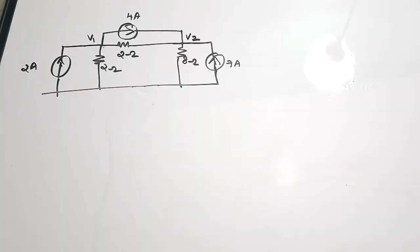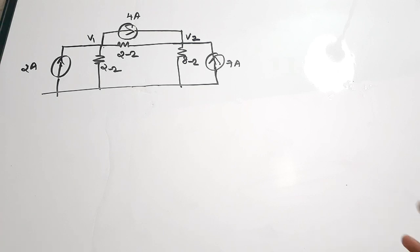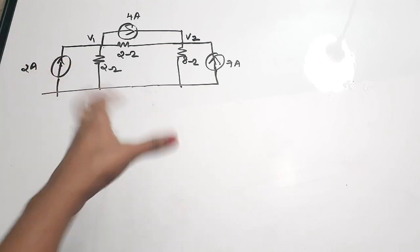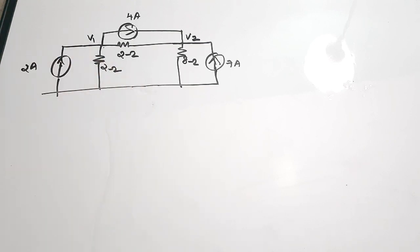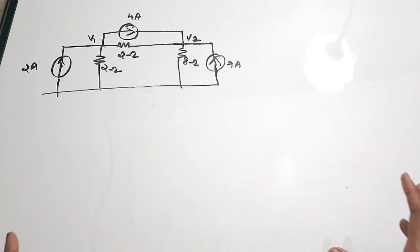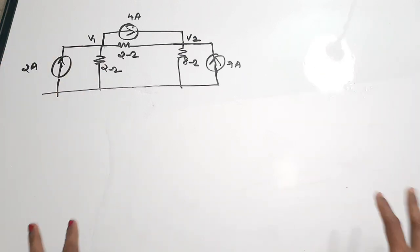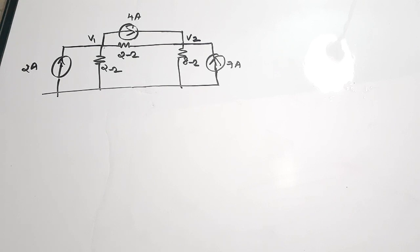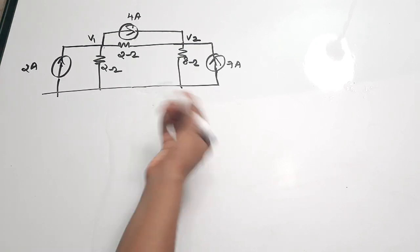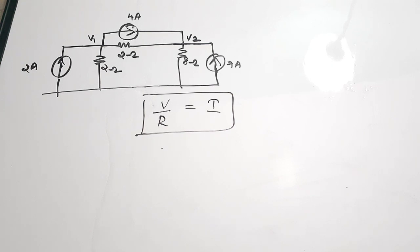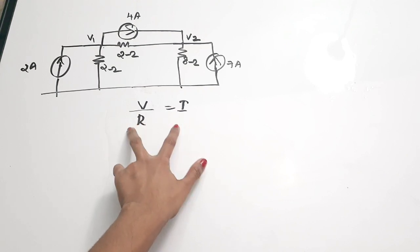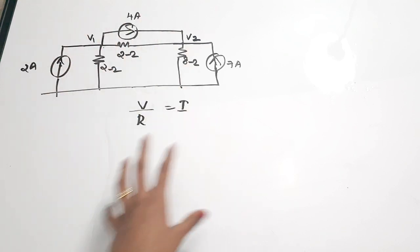The next trick is a matrix method, which you can use in networks having only resistors and current sources. For very complicated questions I would suggest using the normal method of marking current directions and writing equations. But if the circuit has only resistances and current sources, you can apply this matrix method. The question is to find voltages v1 and v2. We write v/r = i, then convert this to matrix form to solve for v1 and v2.